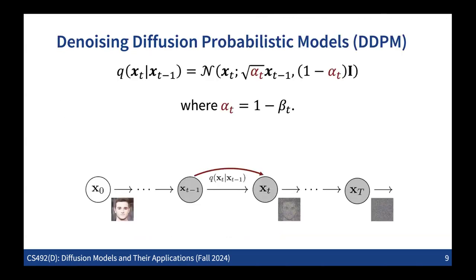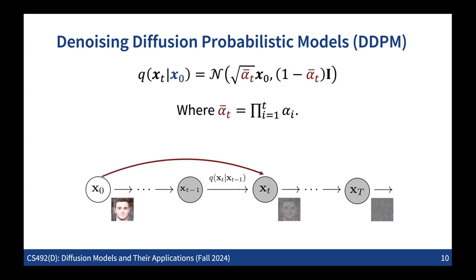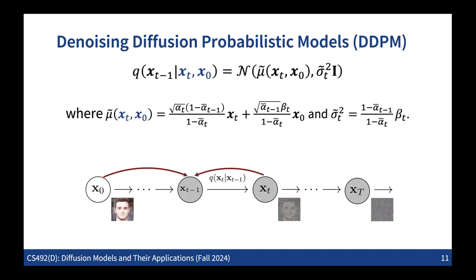There are some key conditional distributions you need to remember to implement the DDPM. The conditional distribution for sampling X_T from X_{T-1} is defined in the predefined Gaussian form. Based on this, we can derive the formulation for what we call the forward jump - even when you want to sample X_T not from X_{T-1} but directly from X_0, you can sample using another Gaussian distribution. And additionally, you can sample X_{T-1} from both X_T and X_0 - this conditional distribution also derives into a Gaussian form with a complex mean and variance.